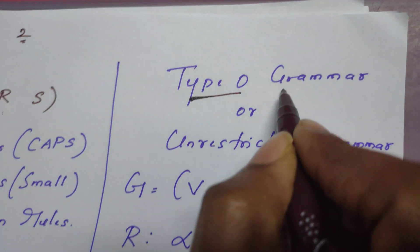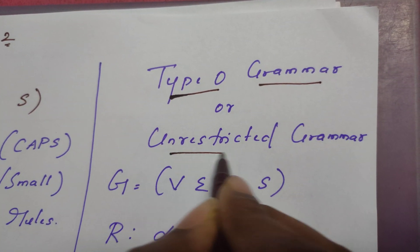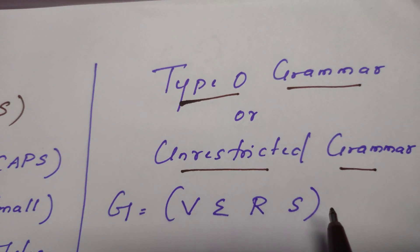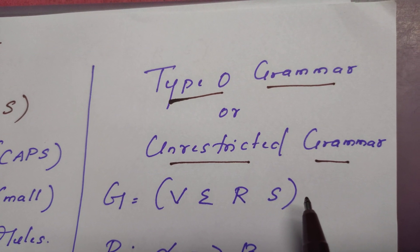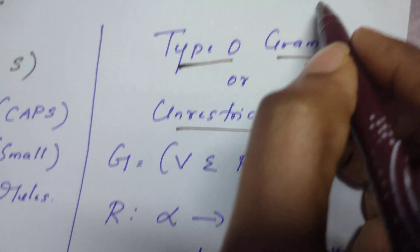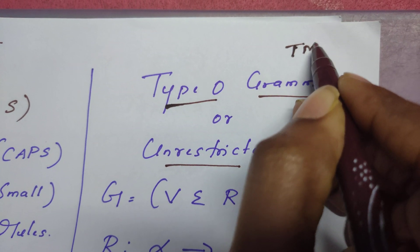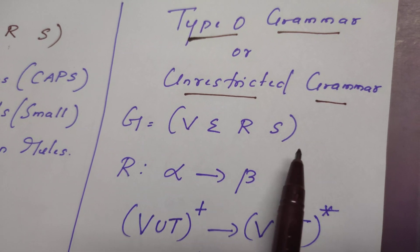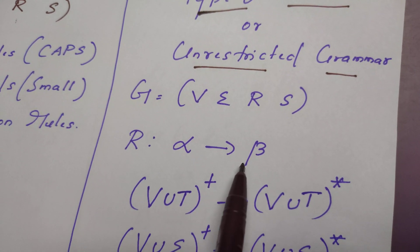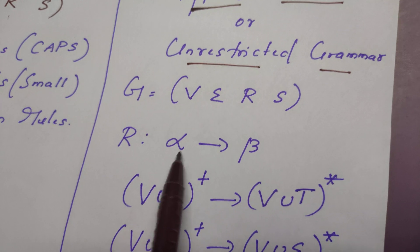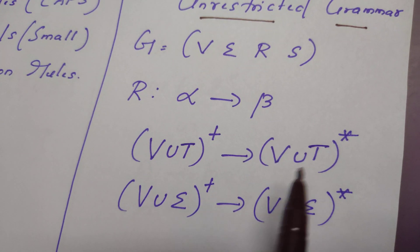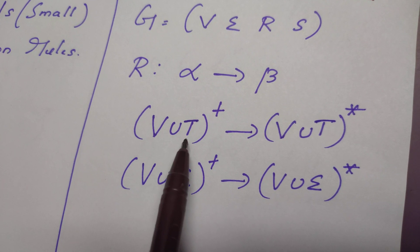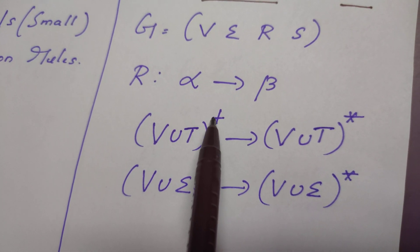Now let us see the grammars one by one. First, Type 0 grammar — the other name is unrestricted grammar. The corresponding language is recursively enumerable language, which is recognized by Turing machines. The grammar definition remains the same and the format of the production rule is alpha can be rewritten as beta. What is alpha? Alpha belongs to V union sigma, the whole to the power of plus. Here plus means positive closure — one or more.